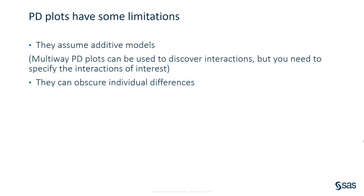There are some important limitations to keep in mind when you interpret PD plots. First, PD plots work by averaging out the effects of other model inputs, so they should not be used if your plot variable interacts strongly with other model inputs. While you can use multi-way PD plots to explore two- or three-way interactions, you would need to specify the interactions of interest up front — partial dependence plots will not automatically discover the interactions for you. Another concern is that because partial dependence plots are plots of averages, they tend to obscure rather than illuminate individual differences.